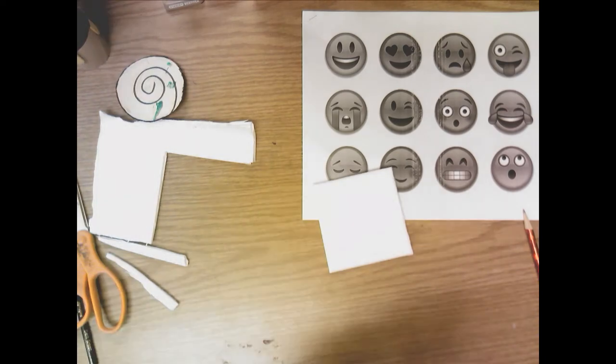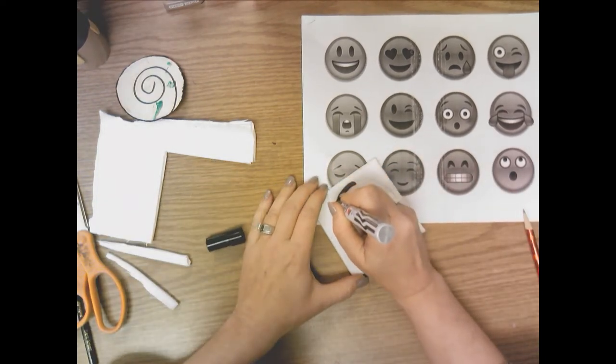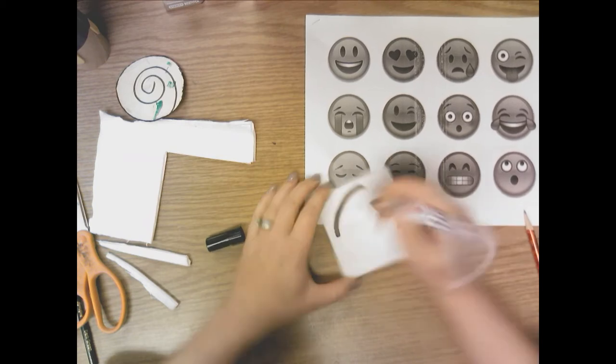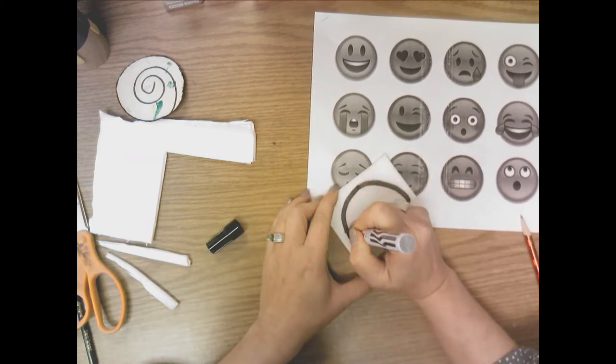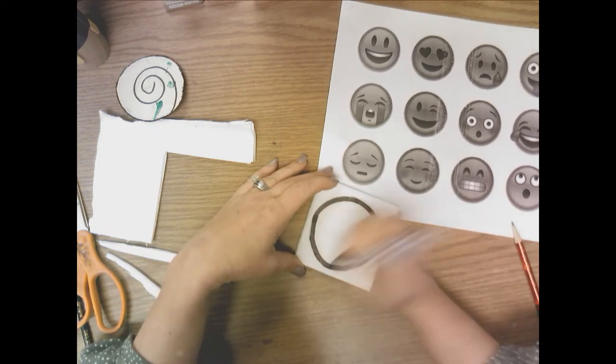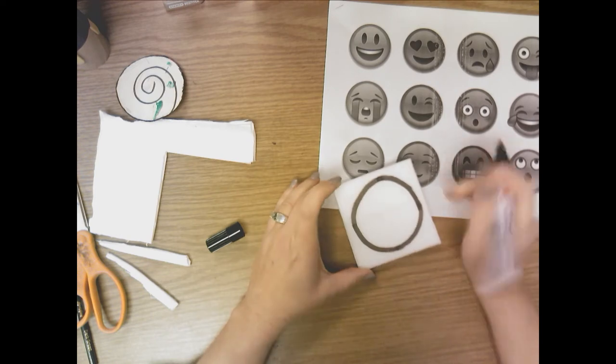So then I'm going to ask you to take a chisel tip marker and go over or around the inside of this circle to make a nice thick round outline. It's a little wonky, but that's okay.